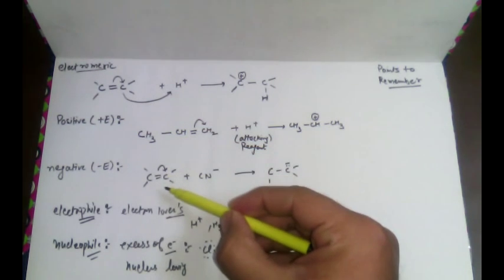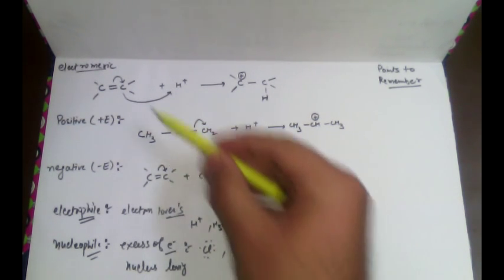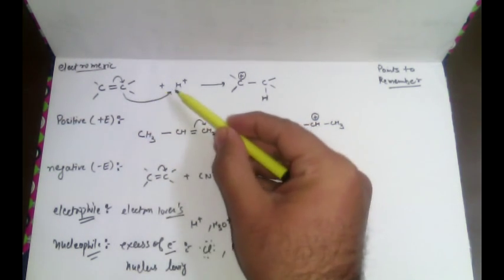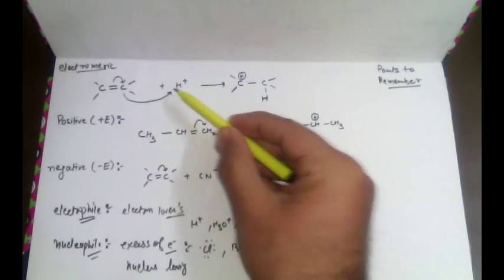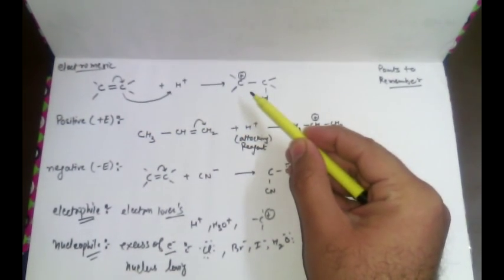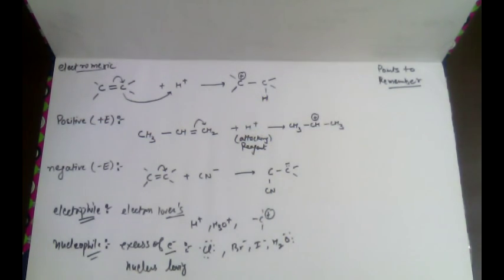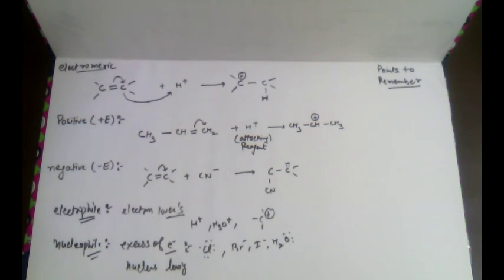In organic chemistry, the organic molecule, sometimes referred to as the substrate, reacts with the attacking reagent, which leads to the formation of the product. Now, in the electromeric effect, there are a few terms we need to learn.